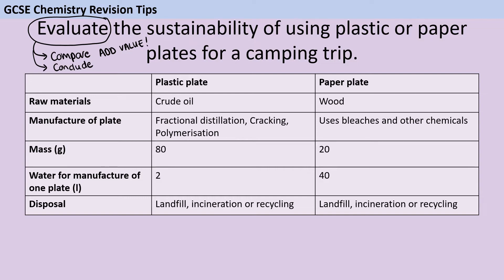Whenever you get an Evaluate question and you're given a table like this with some information, your first step before you write anything down should be to annotate that table with as much information as you can possibly include. Your examiner is allowed to give you marks for annotations that you've made on the table that you haven't actually included in your answer, but also it's going to help you to get a structure clear in your head before you start.